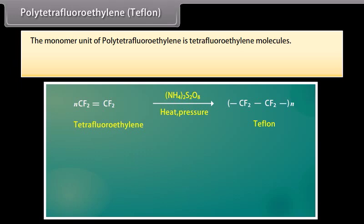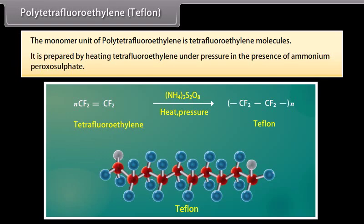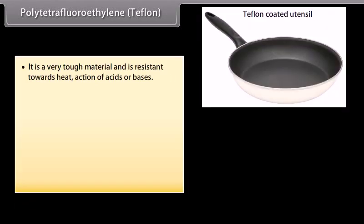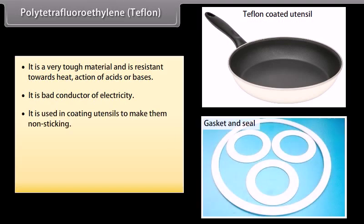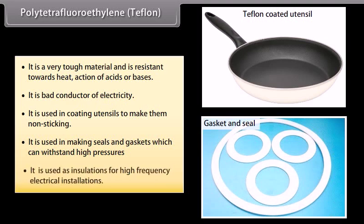The monomer unit of polytetrafluoroethylene (Teflon) is tetrafluoroethylene. It is prepared by heating tetrafluoroethylene under pressure in the presence of ammonium peroxosulphate. It is a very tough material, resistant towards heat and the action of acids or bases, and is a bad conductor of electricity. It is used in coating utensils to make them non-sticking, in making seals and gaskets that can withstand high pressures, and as insulation for high-frequency electrical installations.